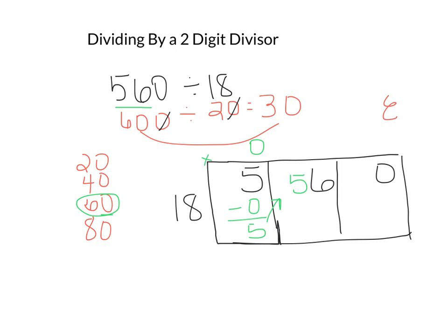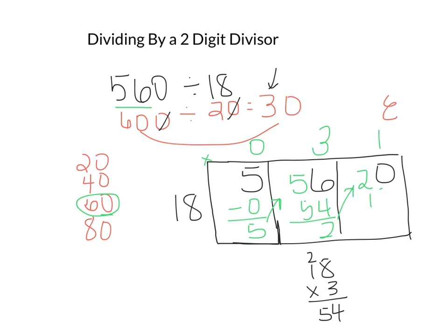If you watch the other videos, you'll know I'm going to do my math off to the side: 18 times 3. I get my 3 from my estimate. Carry 4, that's 54 — pretty darn close. So I'm going to use 3 right here. 3 times 18 is 54. Subtract, I get a 2, that goes right there. 18 into 20 goes in one time, 18, remainder 2.